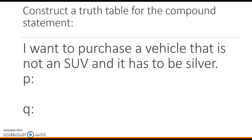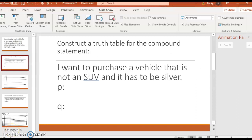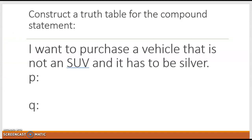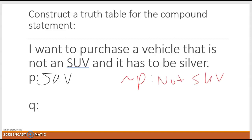Construct a truth table for the compound statement: 'I want to purchase a vehicle that is not an SUV and it has to be silver.' We're going to work in the small version so I can draw. This is first just a conjunction. P is going to be the fact that we are buying an SUV, so not P would be not an SUV. Q would be that we are buying a silver vehicle.